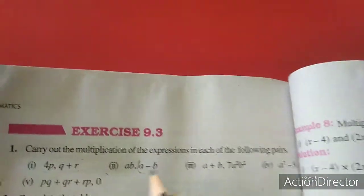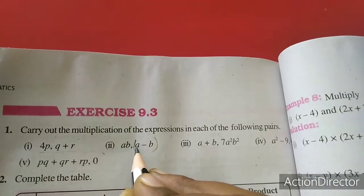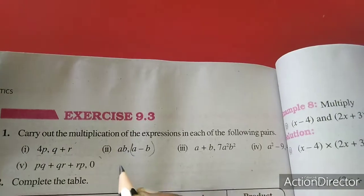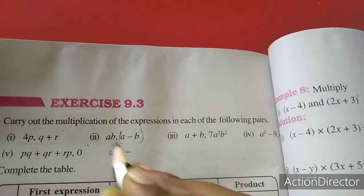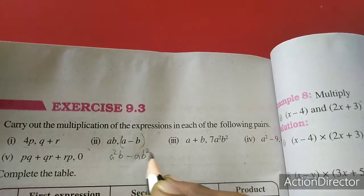Second sum, I keep the bracket. a into a, b into a, so a squared b. This minus b into this, a, b into b, so a into b squared.